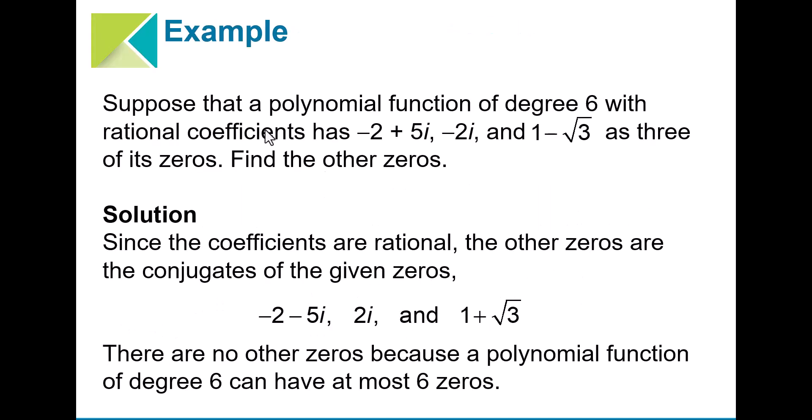For example, if we want a polynomial of degree 6, I can write these as the conjugates. So that becomes negative 5i, plus 2i, and then plus square root of 3.